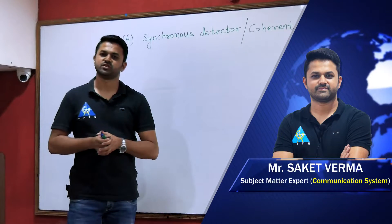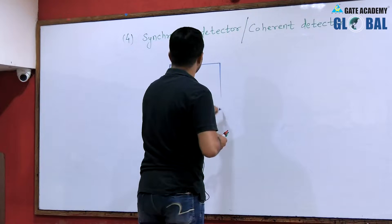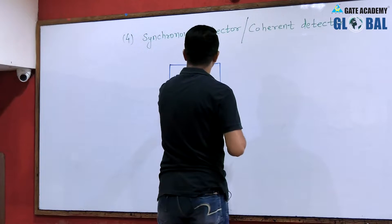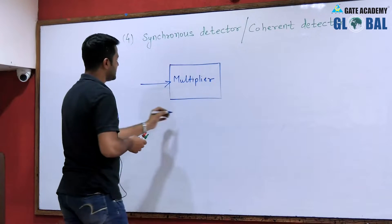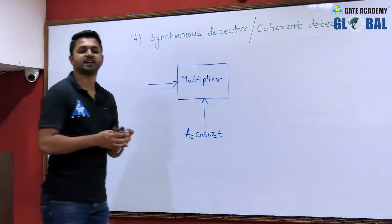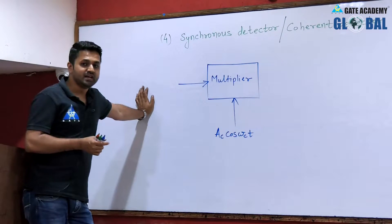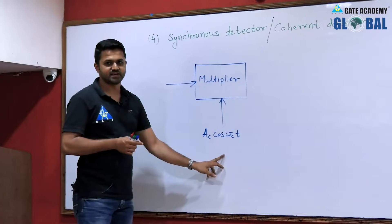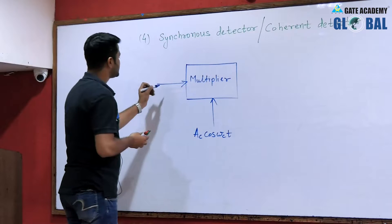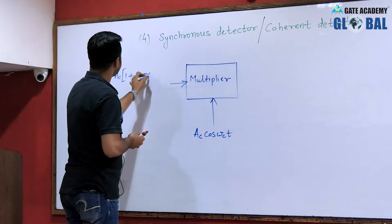The fourth demodulation technique is the Synchronous Detector or Coherent Detector. In this case, first of all we multiply the input signal with the carrier signal, which should be synchronized with the transmitted carrier. The input is the AM signal: Ac(1 + k·m(t))cos(ωc·t).